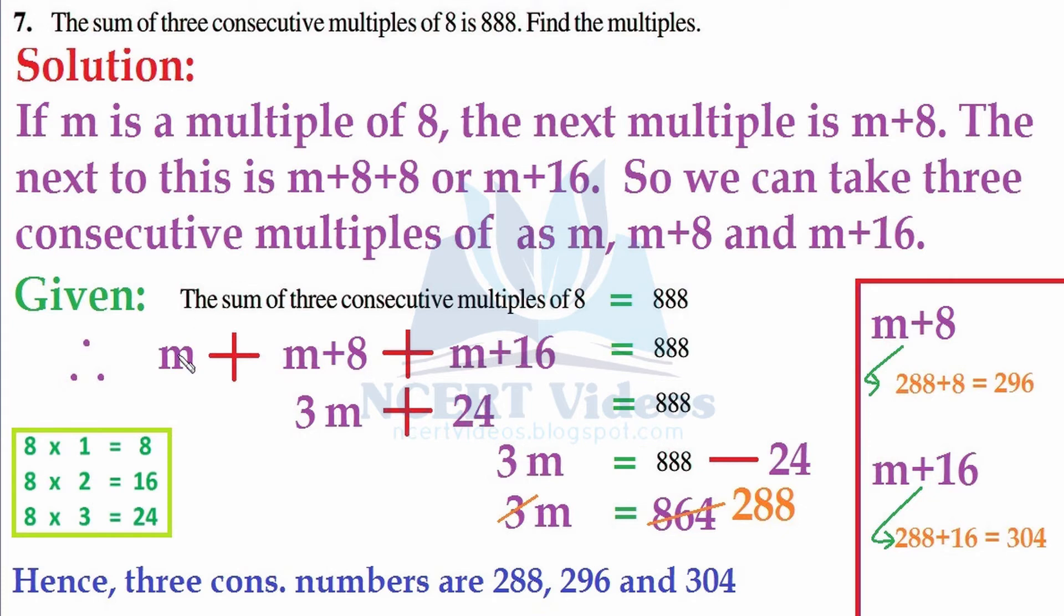Now it is just a matter of solving this expression. How many m's are there? We have 3m, because same variables can be added up and it is understood that it has a coefficient of 1. And 16 plus 8 is 24, and they are getting added up, so this equals 888.